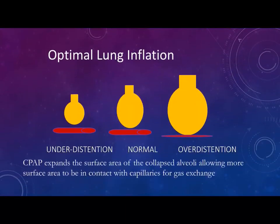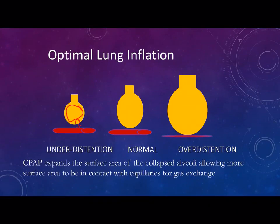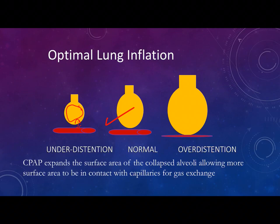This diagram shows the effect of under-inflation, proper inflation, and over-inflation of the alveoli. If the alveolus is under-inflated, the surface area is small, it is far from the pulmonary vessels, decreasing gas exchange and increasing ventilation-perfusion mismatching. With proper inflation, the surface area increases, improving gas exchange, with more contact with the vessels, decreasing intrapulmonary shunt and VQ mismatching.